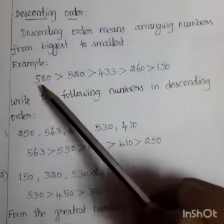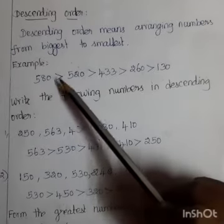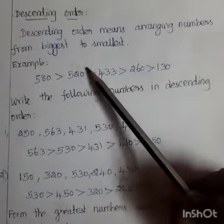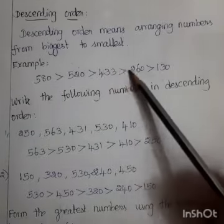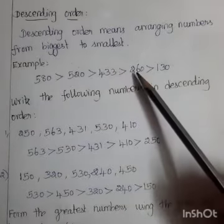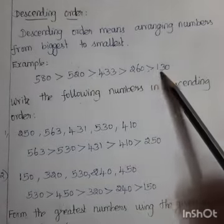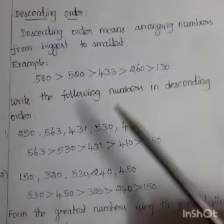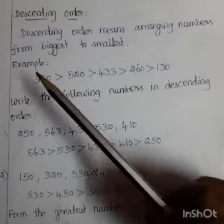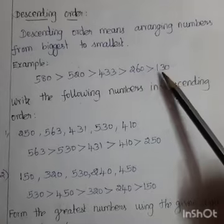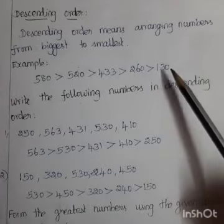Example: 580 is greater than 520, greater than 433, greater than 260, greater than 130. So 580 is the biggest number and 130 is the smallest number.